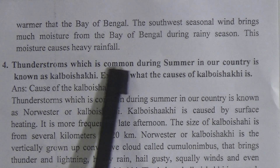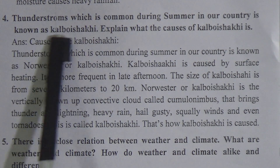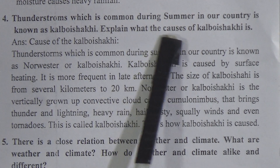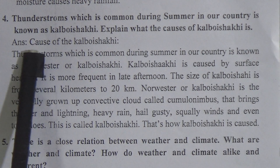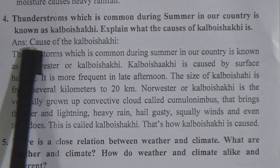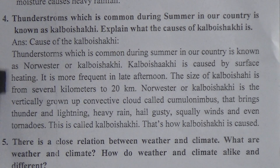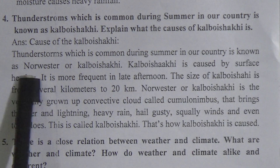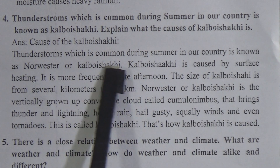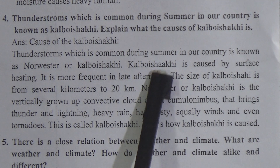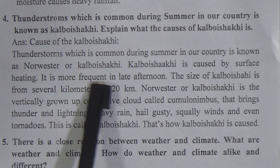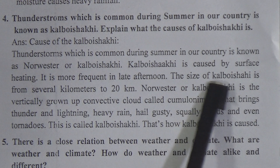Now come to the next question: The thunderstorm which is common during summer in our country is known as Kalbaisakhi. Explain what is the cause of Kalbaisakhi. Answer: Cause of Kalbaisakhi — the thunderstorm which is common during summer in our country is known as Norwester or Kalbaisakhi. Kalbaisakhi is caused by surface heating and is more frequent in late afternoon.